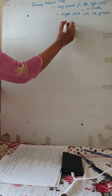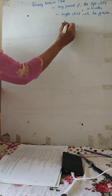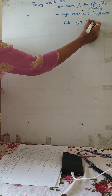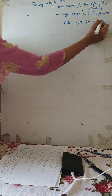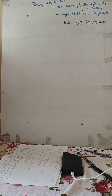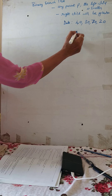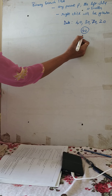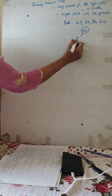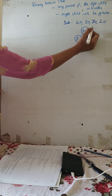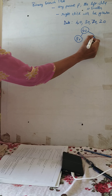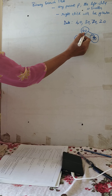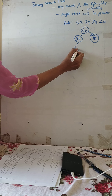Let us take an example with data: 40, 30, 70, 20. The first node will always become the root node. Take the next data, 30 — it is smaller than 40, so it should be attached as a left child. Next comes 70 — it is greater than 40, so it is attached as a right child. Next, 20 — it is less than 40 and less than 30, so it will be attached as the left child of 30.